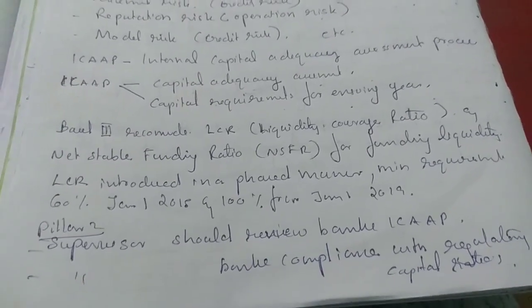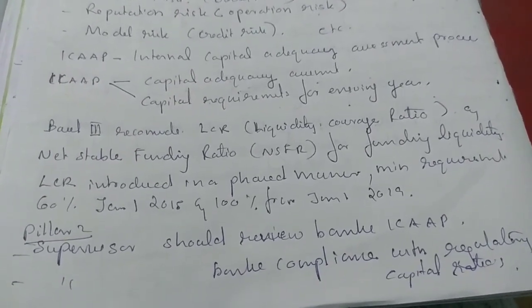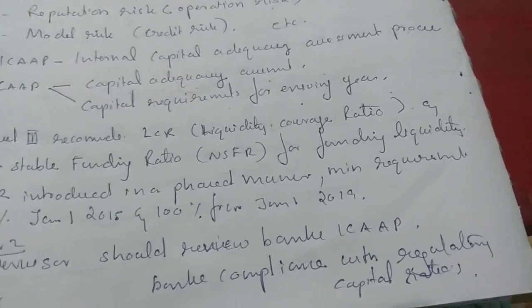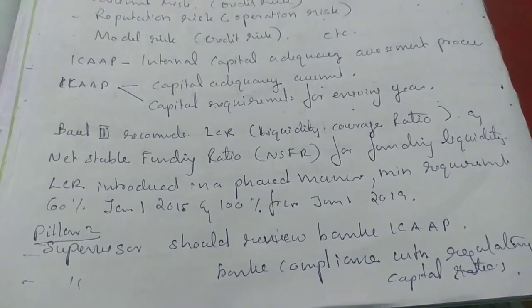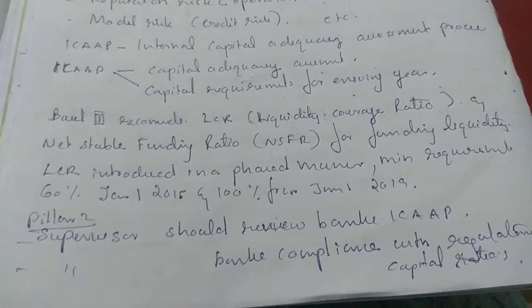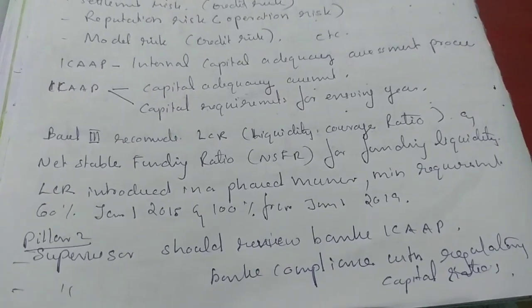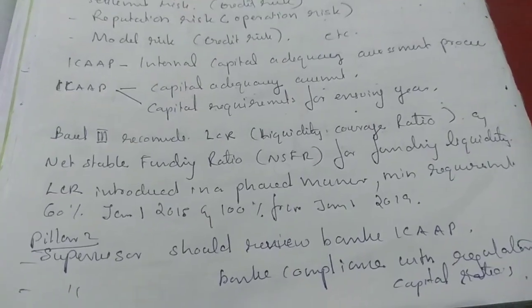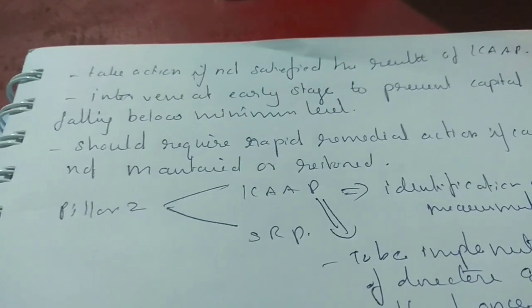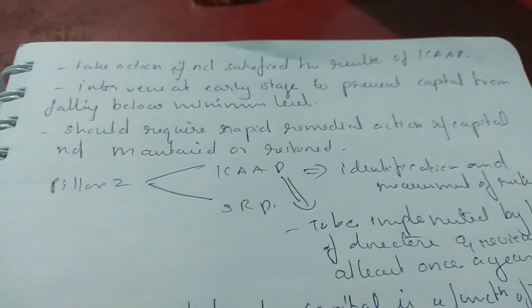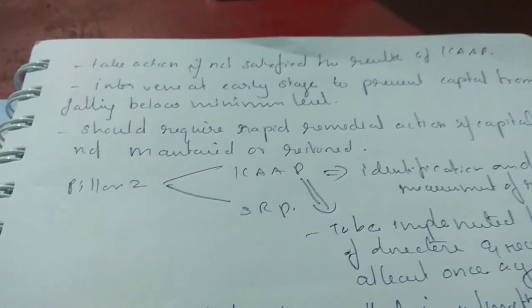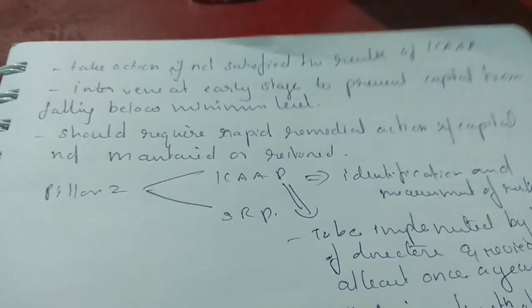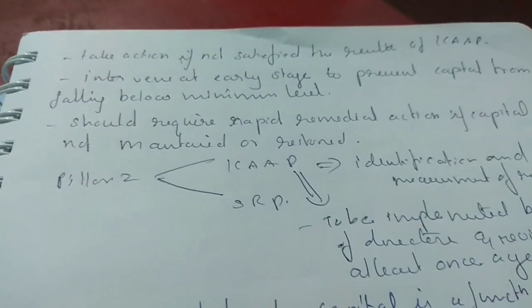Under Pillar 2, the supervisor should review the bank's ICAP and review the bank's compliance with the regulatory capital ratios. A supervisor can take action if not satisfied with the result of ICAP, and can intervene at an early stage to prevent capital from falling below the minimum level.